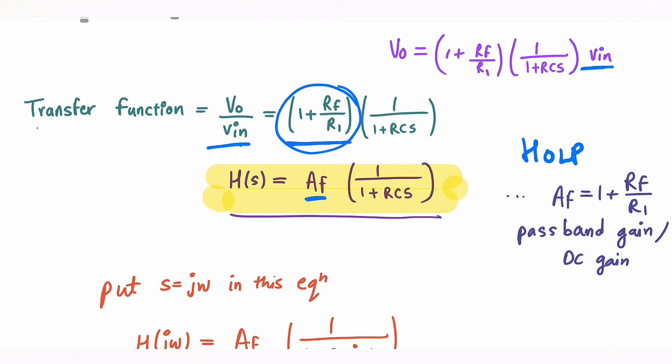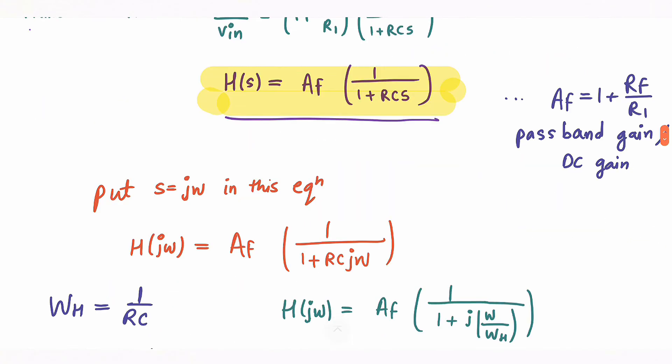But we will do some more analysis for low pass filter so I am putting s equal to jω in this equation. So H of s will be H of jω, now s will be replaced by jω. Now the last thing remaining here is RC. One upon RC we call ωH. Why H? Because it is referring to high cutoff frequency. So I am replacing RC by ωH, so our equation will be this, ωH will be in denominator. So this is my new equation.